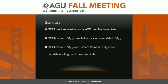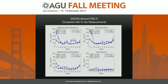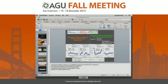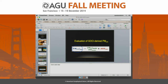An audience member asks about the methodology: the satellite AOD is multiplied by the PM2.5 to AOD ratio from the model. They ask whether the model PM2.5 to AOD ratio is being used to scale the satellite, and whether the model AOD is a factor of two larger than the satellite.